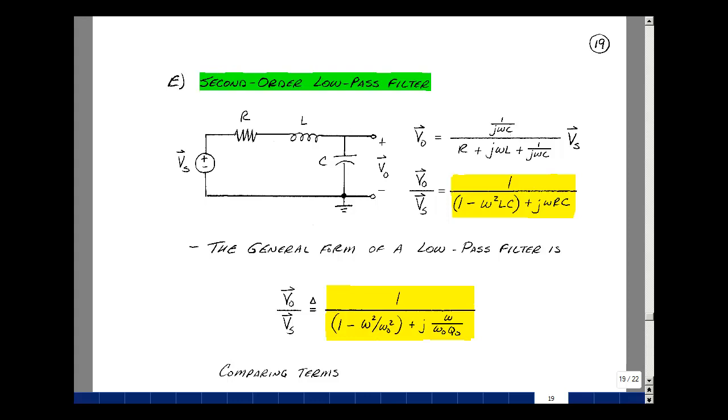Let's see if we get that mathematically. Let's solve for V out over V sub s. Voltage here is the voltage divider of one over j omega C with R plus j omega L plus one over j omega C. Bring the V sub s over here. Let's multiply the numerator and denominator by j omega C. So I get a one, j omega RC, j squared, which gives me a minus one, omega squared, and then L times C. Multiplying j omega C times this term, we just get a one.